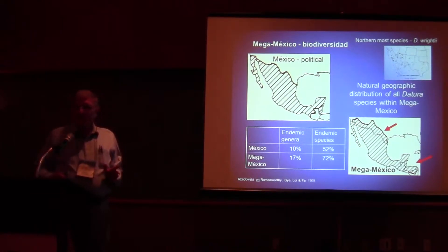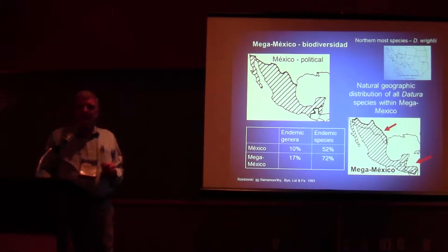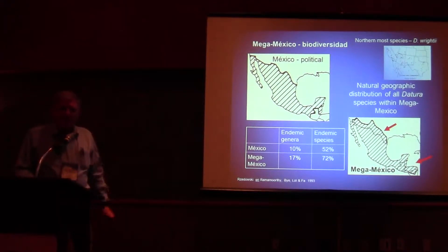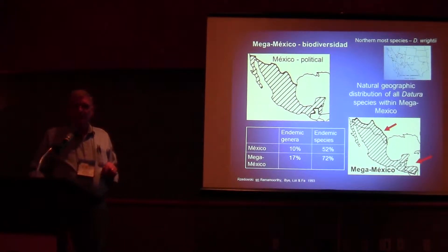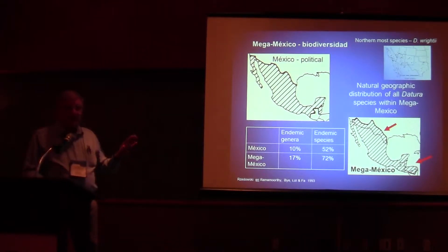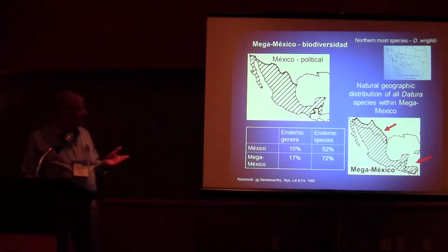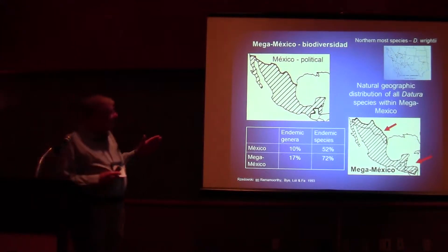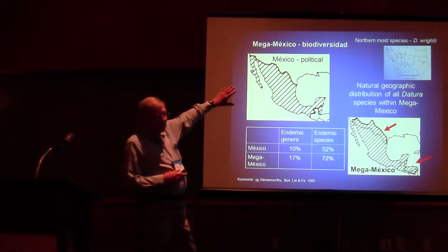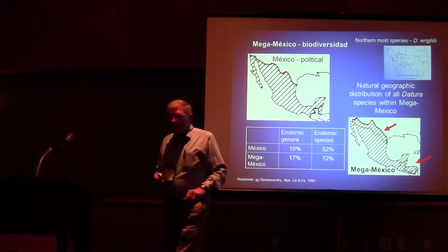First of all, what is Mega Mexico? It's a term that we coined when we published our first book on Biodiversity of Mexico back in 1992. It essentially takes a look at natural boundaries and distribution plans for putting up boundaries for what is Mexico. We have political Mexico and we have Mega Mexico.